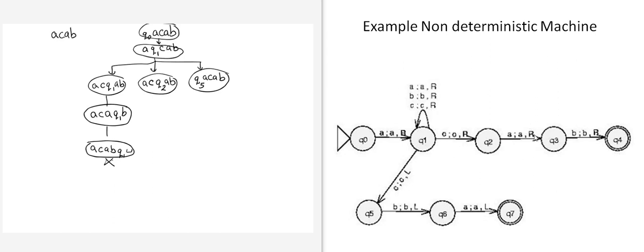Now exploring the Q2 branch: we are at Q2 and read A. It moves to the right and transitions to Q3, giving configuration A, C, A, Q3, B. Then at Q3, we read B, replace it with B, move to the right, and go to Q4. The configuration becomes A, C, A, B, Q4 — and this is an accept configuration.